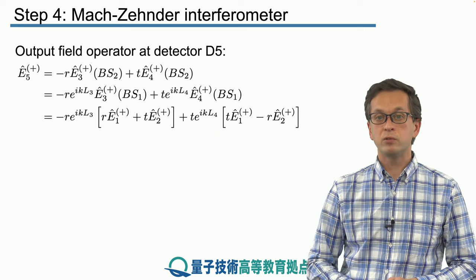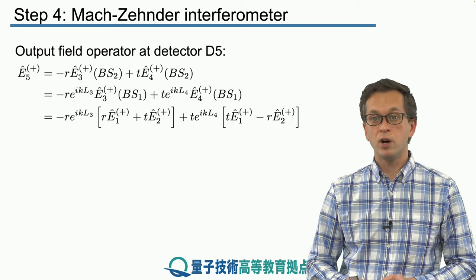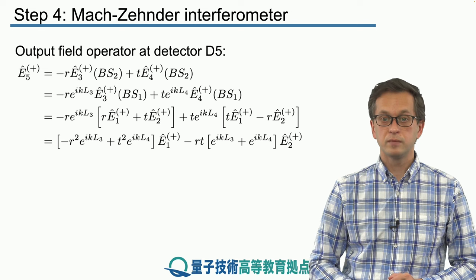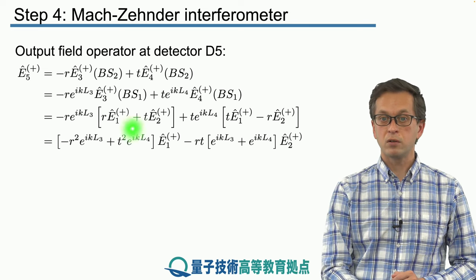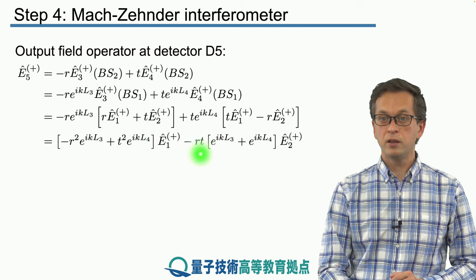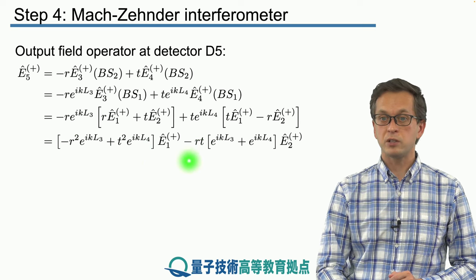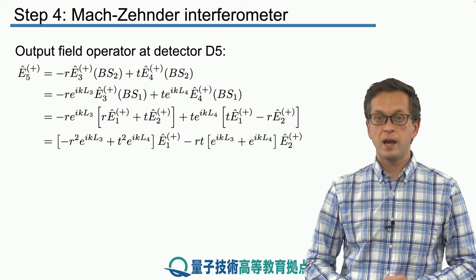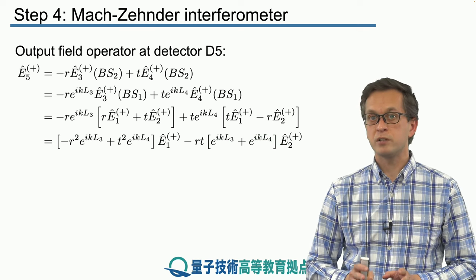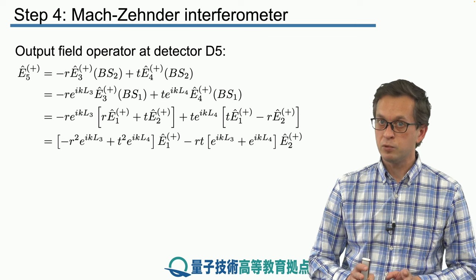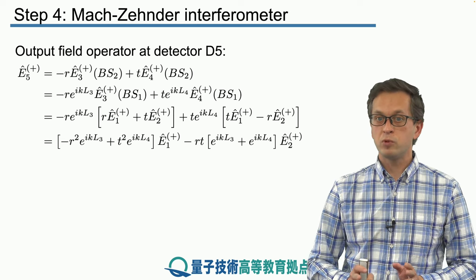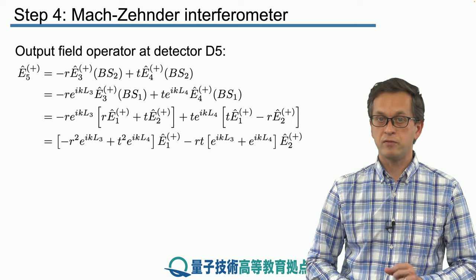Now all we have to do is we just collect terms of E1 and E2. So we have the following. We've got this long expression in front of E1 and this long expression in front of E2. I encourage you to do these calculations by hand in your time. They're not difficult to do, but if you just read them you will not understand the mathematics and the physical implications.